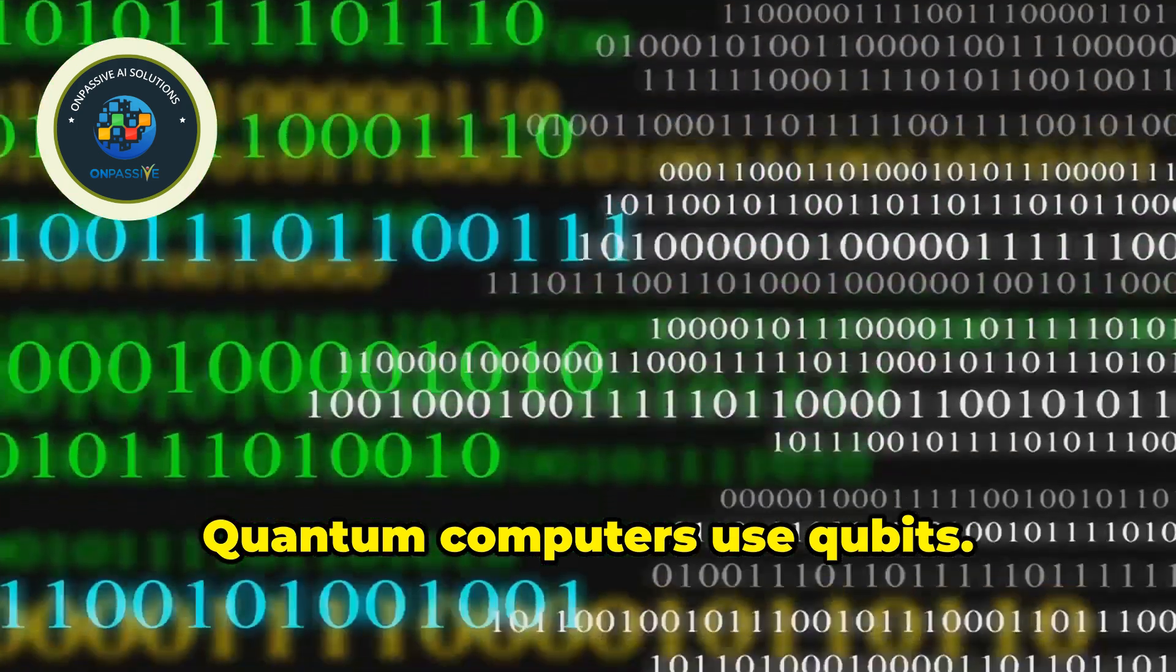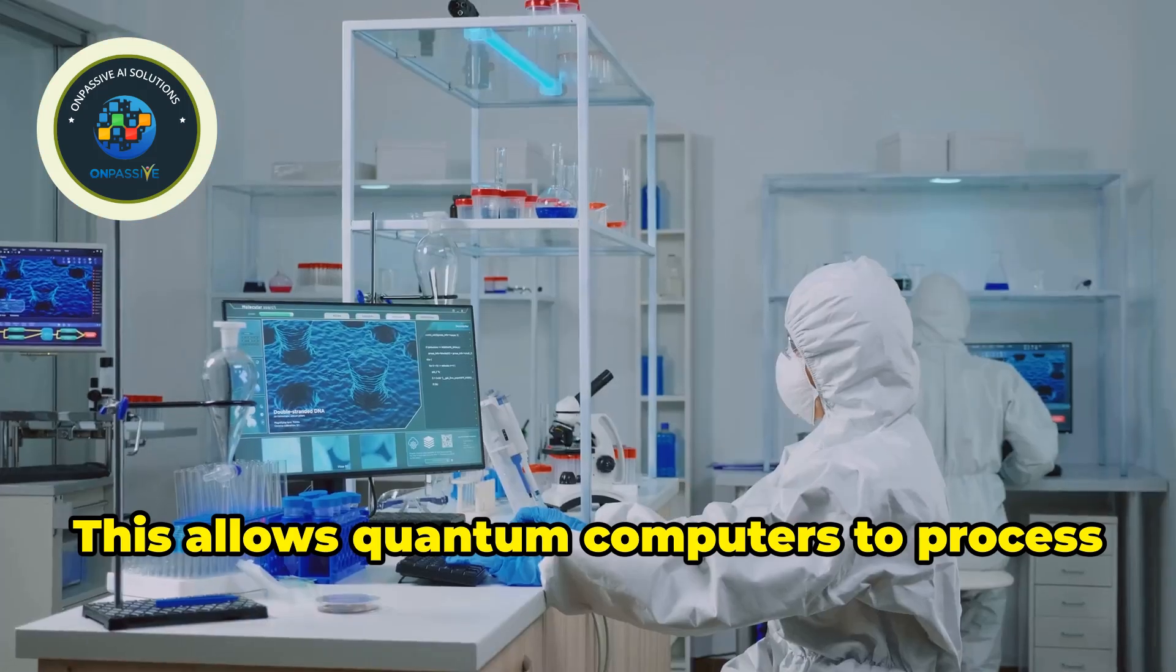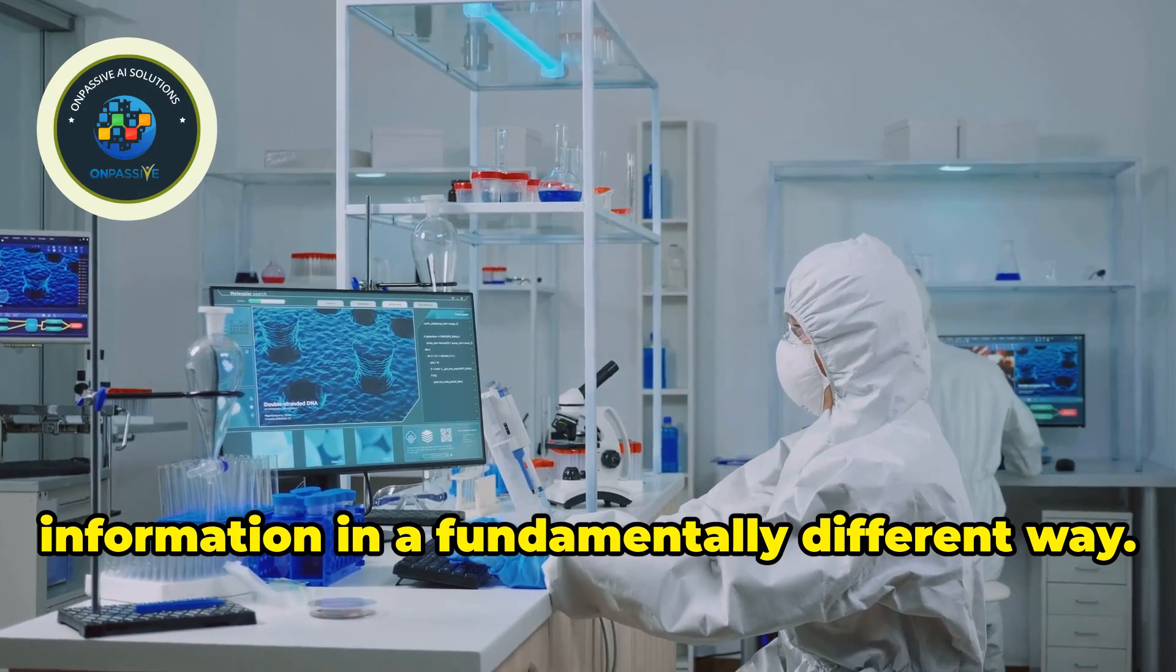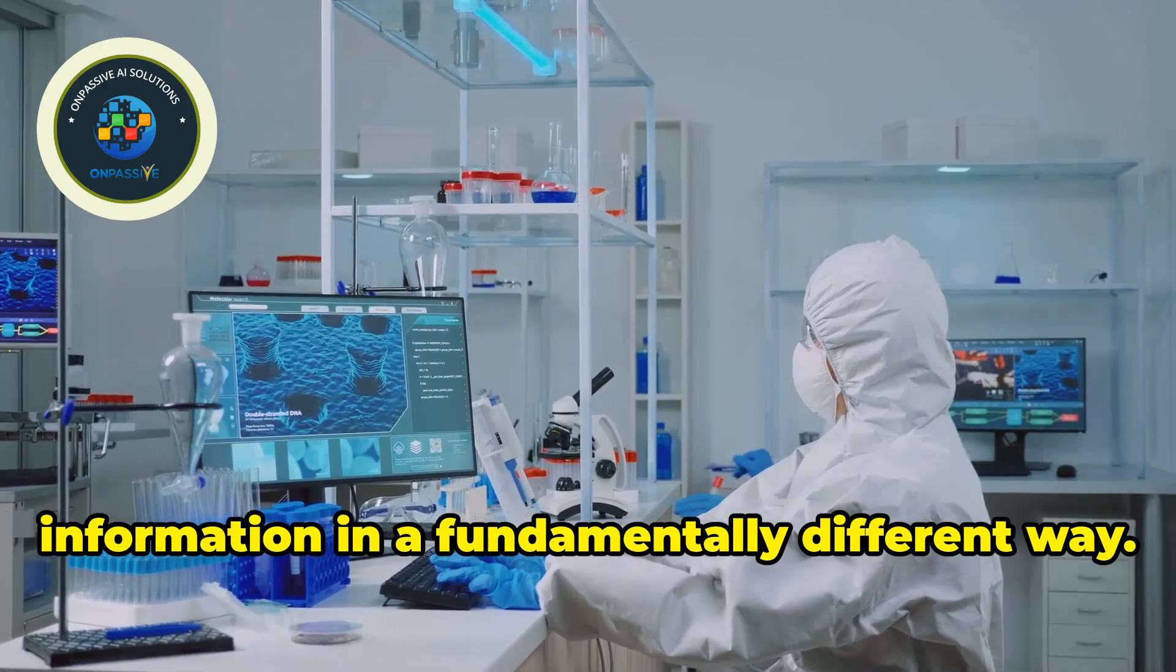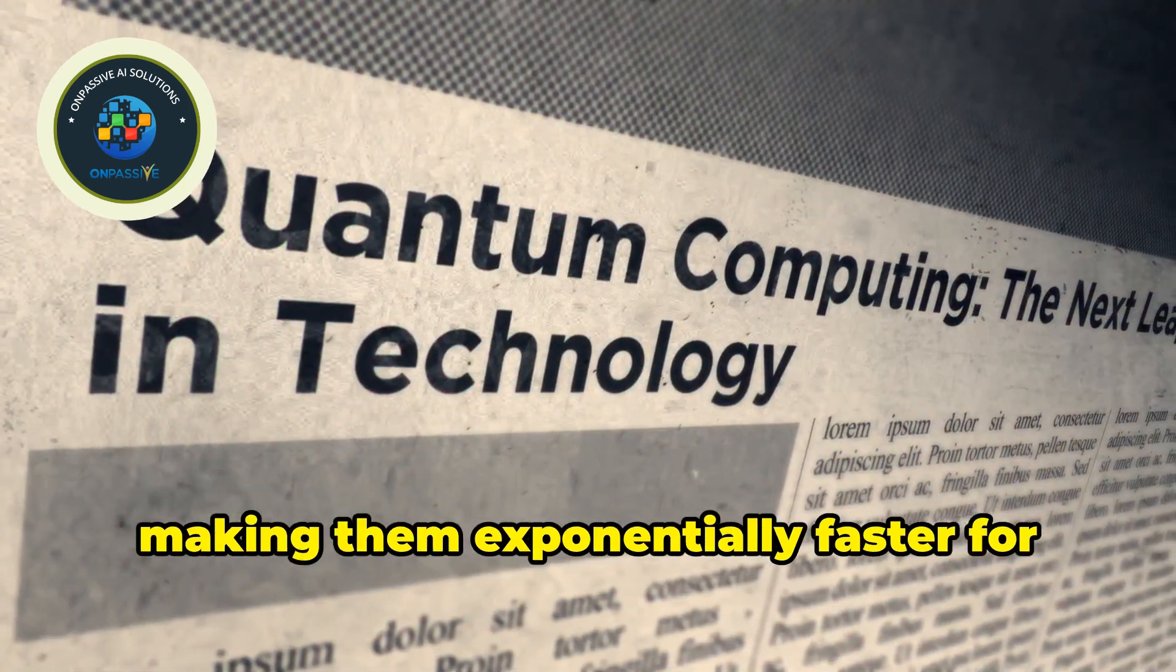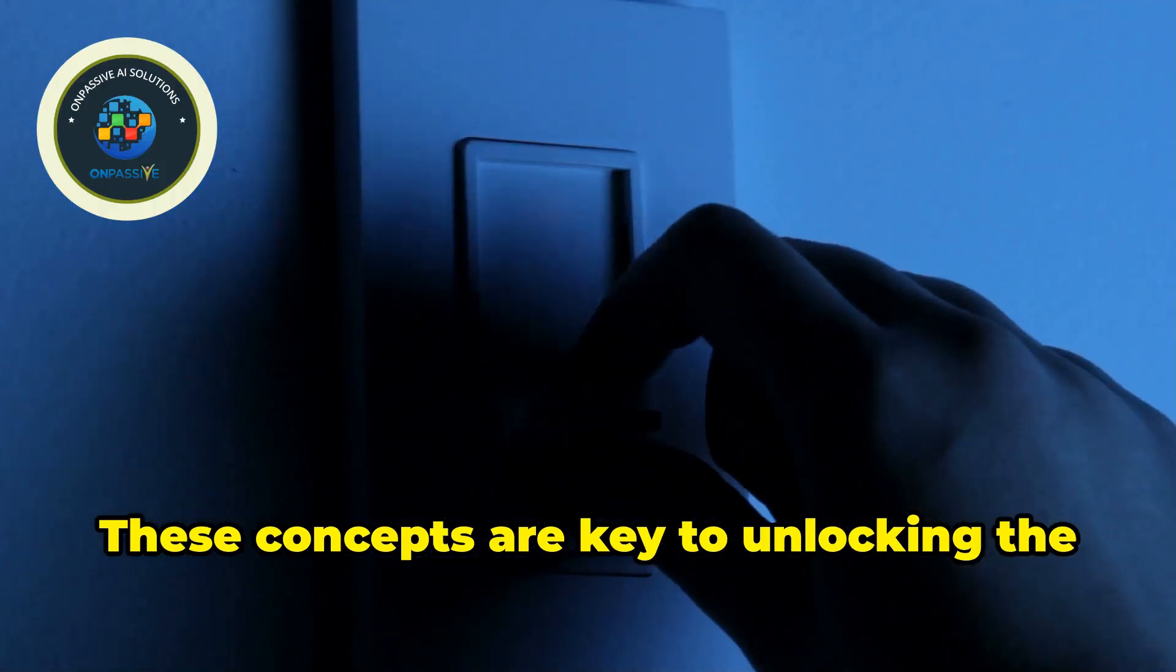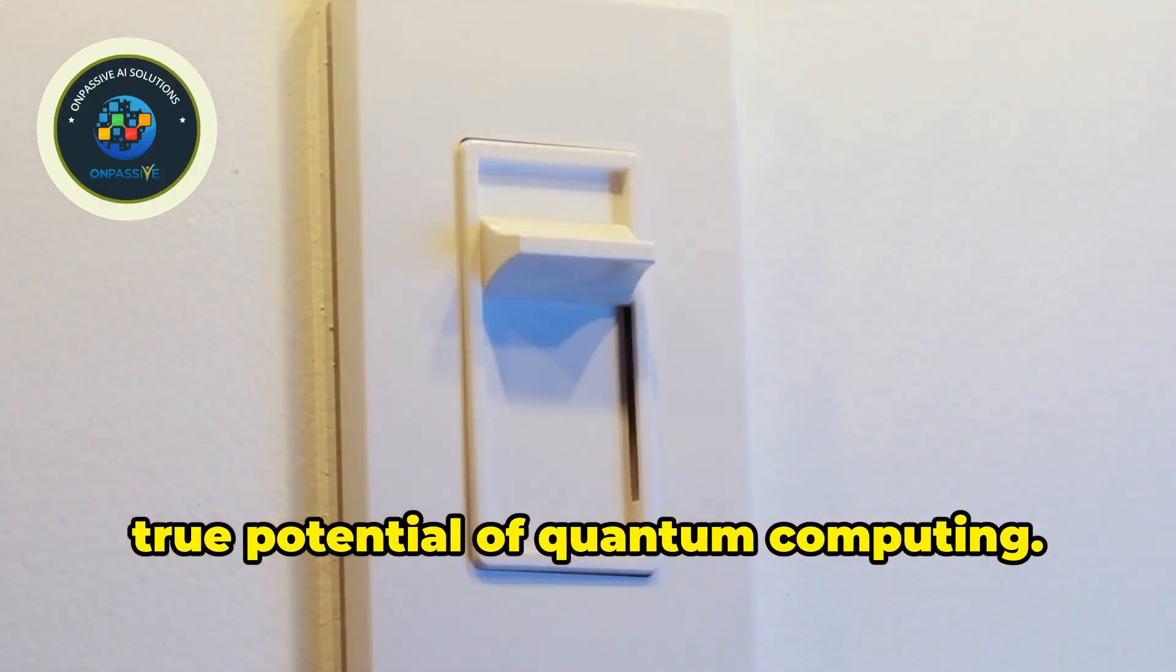Quantum computers use qubits. Qubits can be zero, one or both simultaneously. This allows quantum computers to process information in a fundamentally different way. They can explore multiple paths simultaneously, making them exponentially faster for certain tasks. These concepts are key to unlocking the true potential of quantum computing.